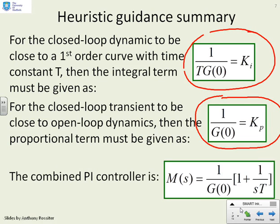If we put those two together, this gives us our PI compensator. 1 over g of 0 into 1 plus 1 over st. And you'll notice there's a very nice structure there. g of 0, something to do with the process, and T, the time constant that you want.